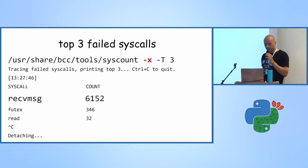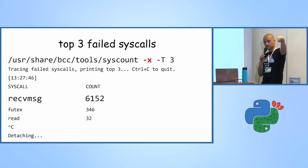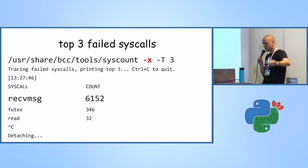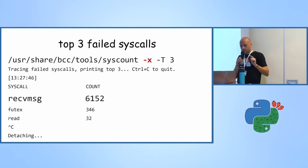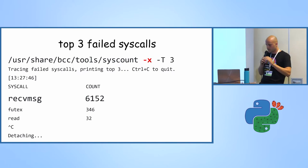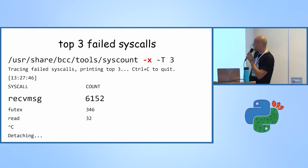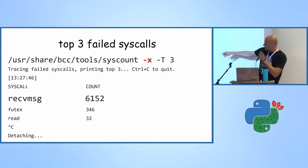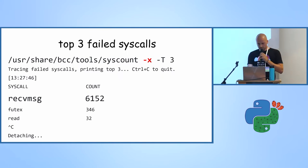Another example: we can get system-wide — not just for any single process — the top failing system calls. We can see that recvmsg is not performing well, followed by futex and the read system call.